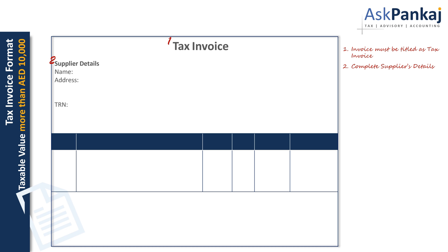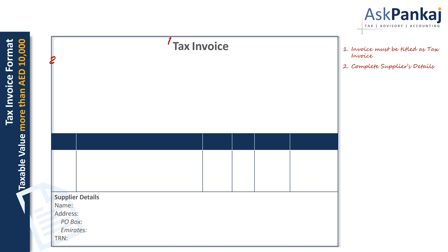The mailing address should comprise of office number, lot number or building name, locality, PO box, and Emirates. Alternatively, you must at least mention your PO box and corresponding Emirates. Mere mentioning of the locality or building name alone is not sufficient. These details could be mentioned anywhere on the invoice — at the top, at the bottom, or even on your printed letterhead.